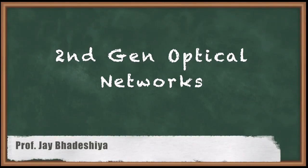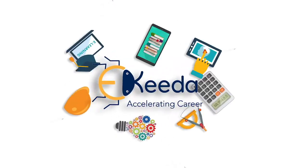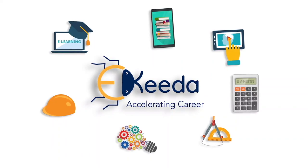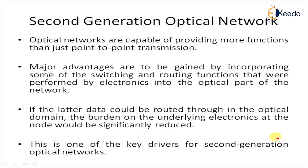Here we are going to learn about second generation optical networks. SONET and SDH standards were designed originally for the TDM system prevalent in first generation optical networks. With the use of TDM, time division multiplexing, a data stream at a higher bit rate is generated directly by multiplexing lower bit rate channels. High capacity TDM systems operate at a level up to 10 Gbps.